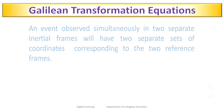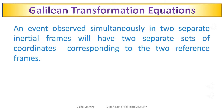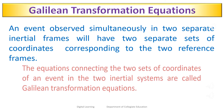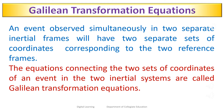An event observed simultaneously in two separate inertial frames will have two separate sets of coordinates corresponding to two reference frames. The equations connecting the two sets of coordinates of an event in the two inertial systems are called Galilean transformation equations.